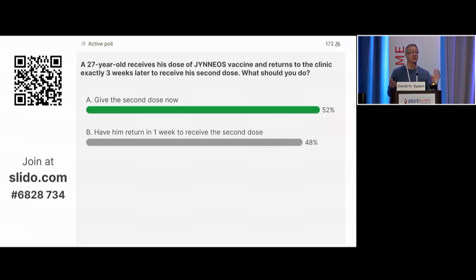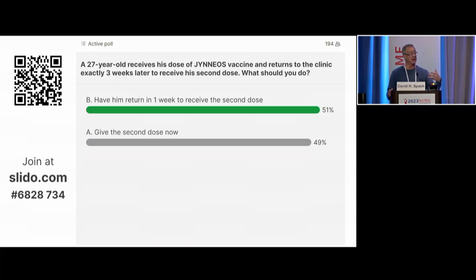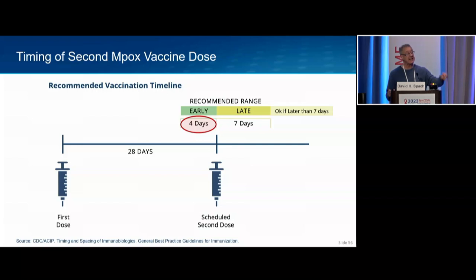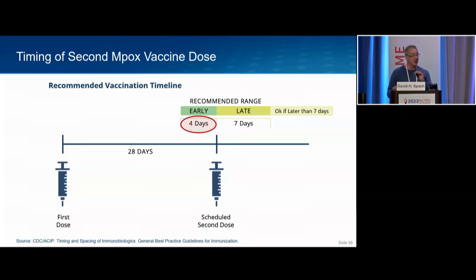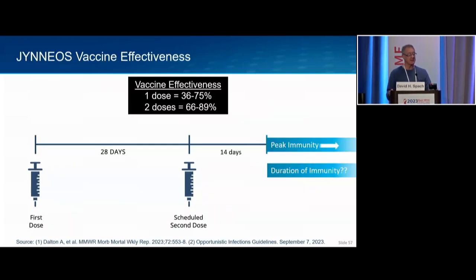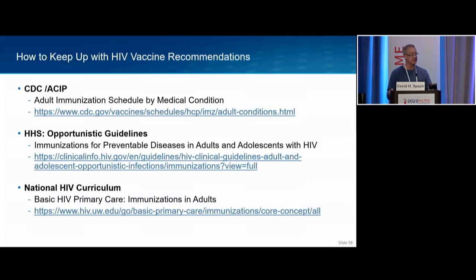The practical caveat is: if there's no chance of follow-up, go ahead and give the vaccine. But the technical correct answer is to have the person return in a week. The most important take-home is educating patients to wait one month before coming back. It's always fine to give it late — the longer you wait, the longer before they're protected. Peak immunity is about two weeks after dose one; more effectively 70–80% protection after two doses.